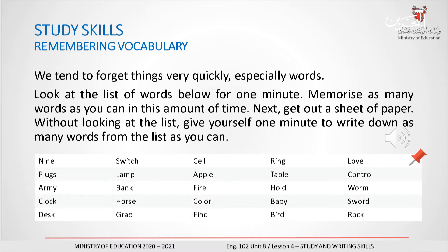Study Skills: Remembering Vocabulary. We tend to forget things very quickly, especially words. Look at the list of words below for one minute. Memorize as many words as you can in this amount of time. Next, get out a sheet of paper. Without looking at the list, give yourself one minute to write down as many words from the list as you can.